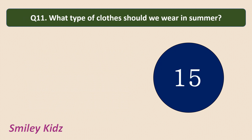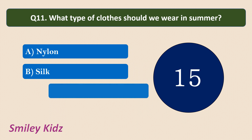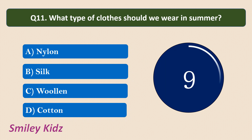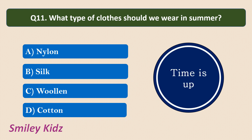Question number 11. What type of clothes should we wear in summer? Options are: nylon, silk, woolen, or cotton. The correct answer is cotton. We should wear cotton clothes in summer because cotton is a good absorber of water — that is sweat — and it exposes it to the atmosphere for easy evaporation.